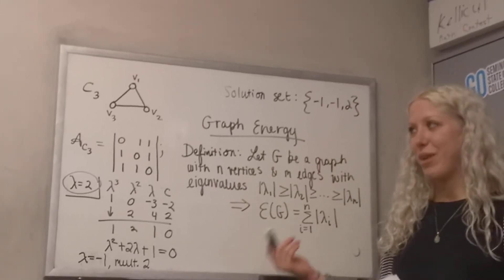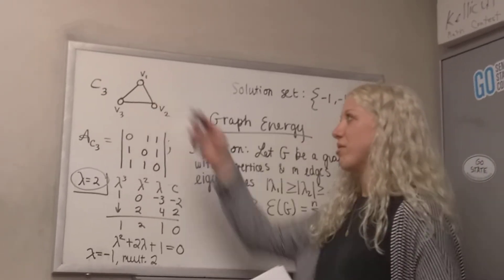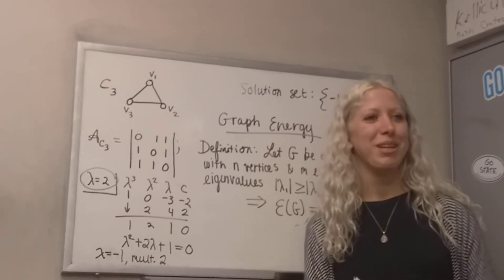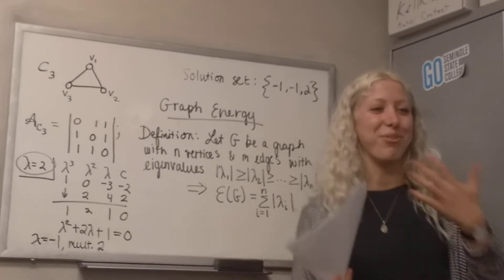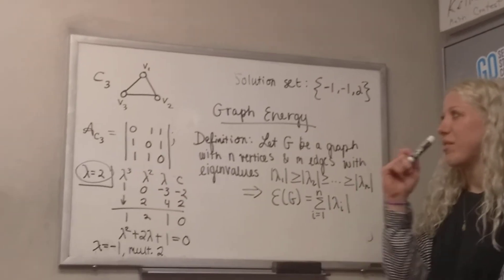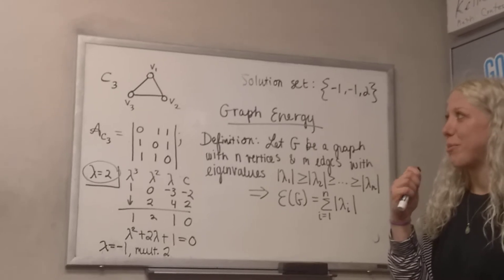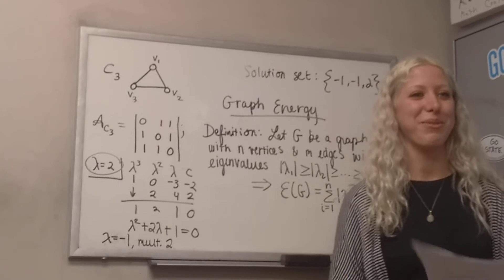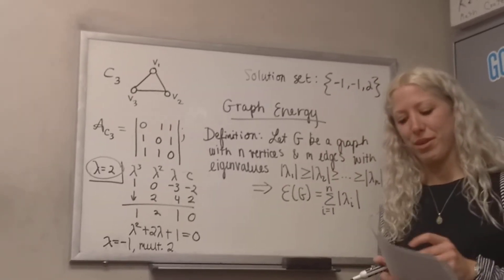Ivan Gutmann was a chemist, and they were looking at these vertices to represent the atoms of a molecule and the edges to be their bonds. They were looking at the energy and what that meant. I don't know chemistry, but in terms of applications, there's probably a lot more that can be done because it's a relatively new area of math, and not a lot of papers have been written.